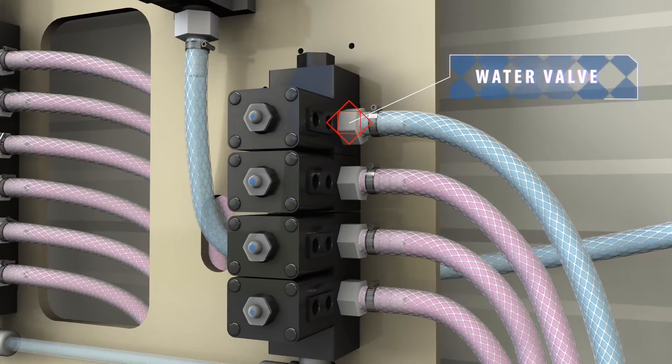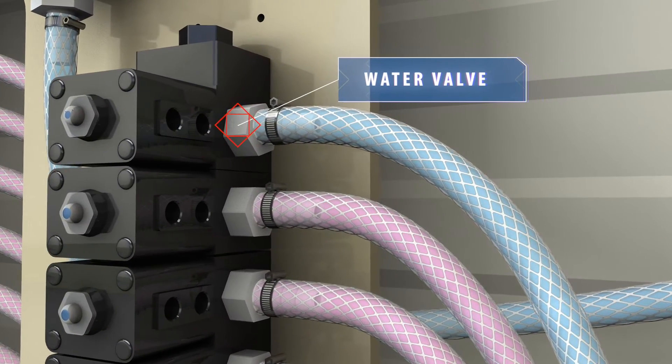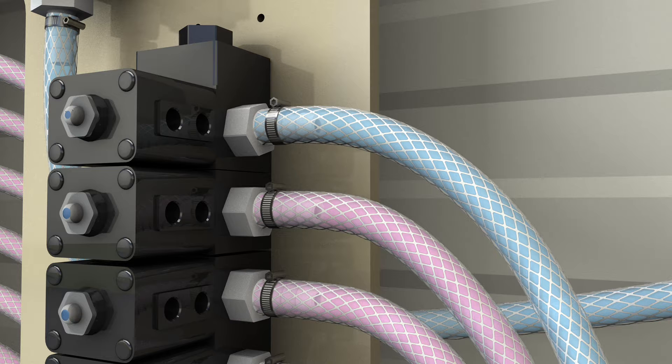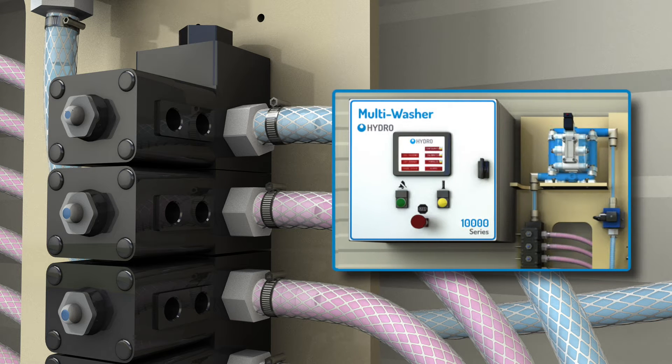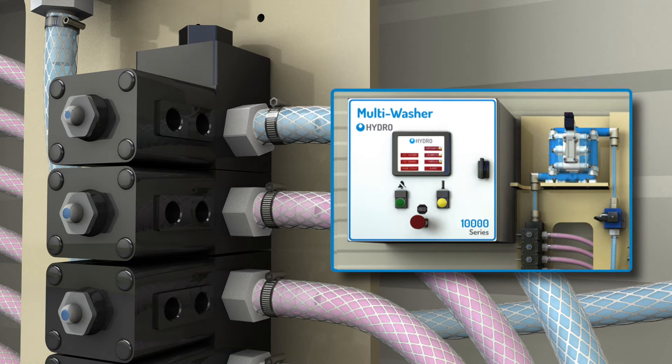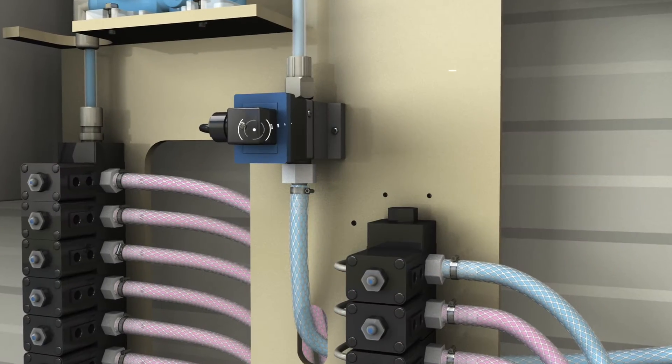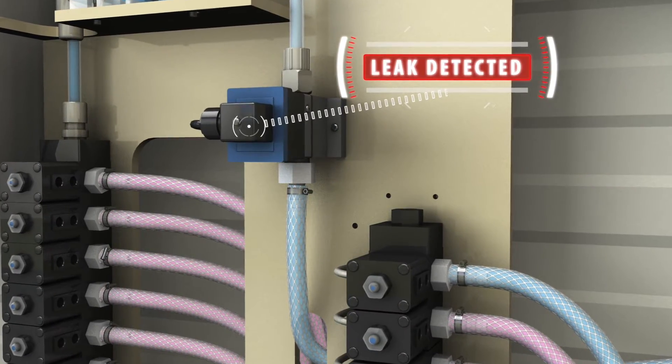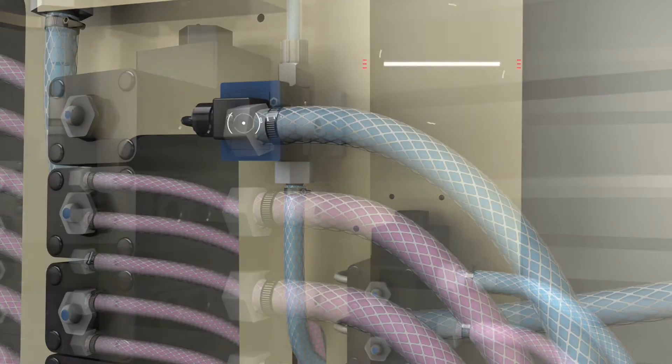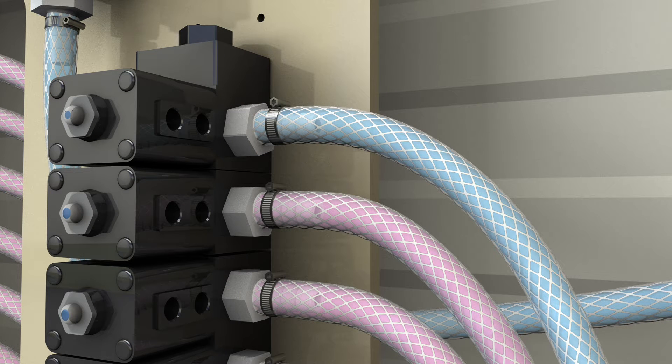During the leak test, the water valve opens at the collector which pressurizes the channel while product valves and distributor valves remain closed. If the programmable logic controller or PLC detects pulses from the flow meter, that means there's a leak and the dosing is aborted. At the end of the leak test, the water valve at the collector remains open.